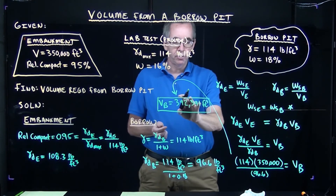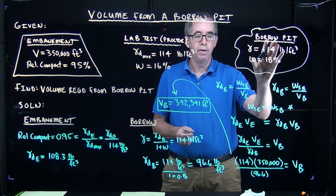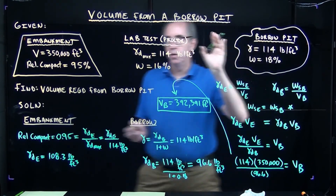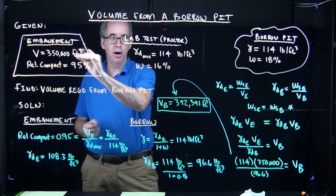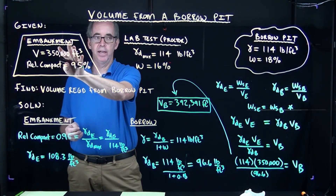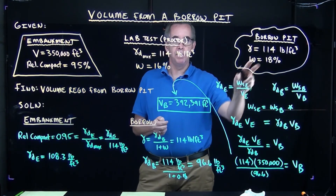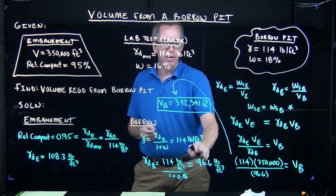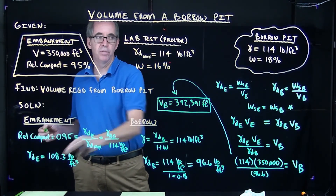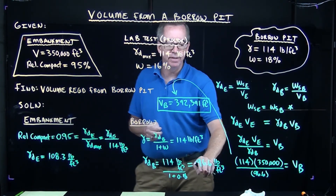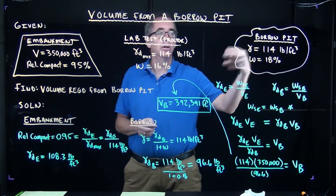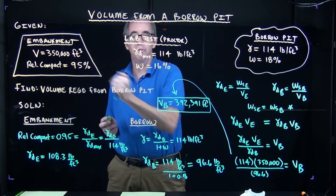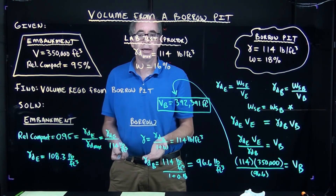To recap: we're going to have to extract 392,391 cubic feet of soil from the borrow pit so that when we compact it to meet the compaction requirements, we get 350,000 cubic feet in the embankment. The reason is that the soil in the borrow pit has a dry unit weight of 96.6 pcf and must reach 108.3 pcf — so we need roughly 392,000 cubic feet from the borrow pit, which after compaction yields the required 350,000 cubic feet in the embankment.